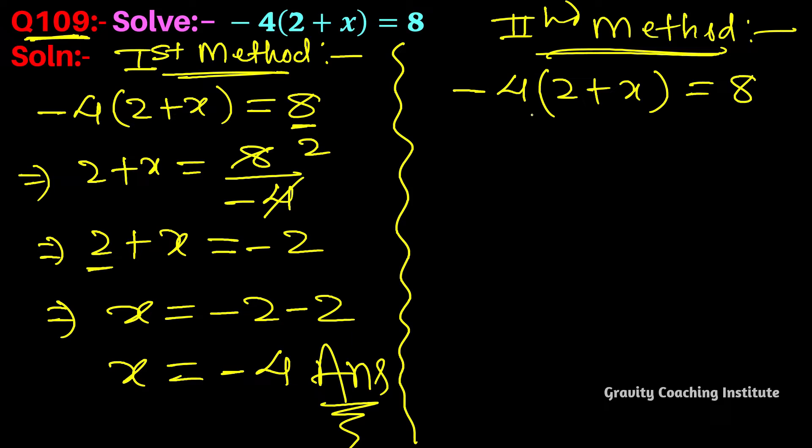In this method, first we will open the bracket. -4 will multiply with both terms. -4 multiplied by +2: multiply the signs first, minus and plus gives minus, so -8. Then -4 multiplied by x gives -4x. So -4x = 8.